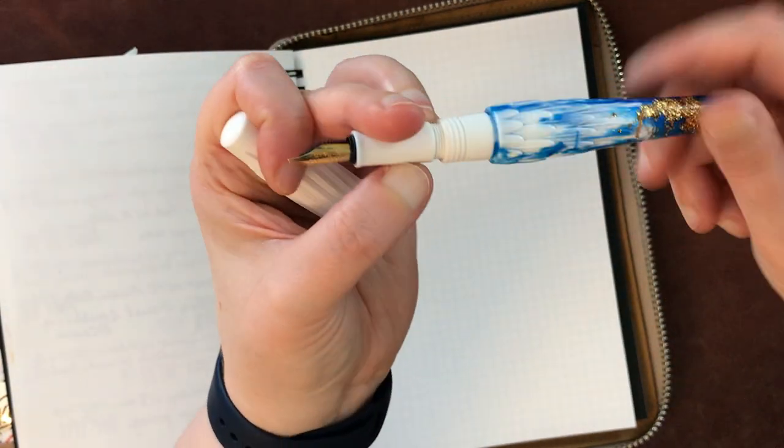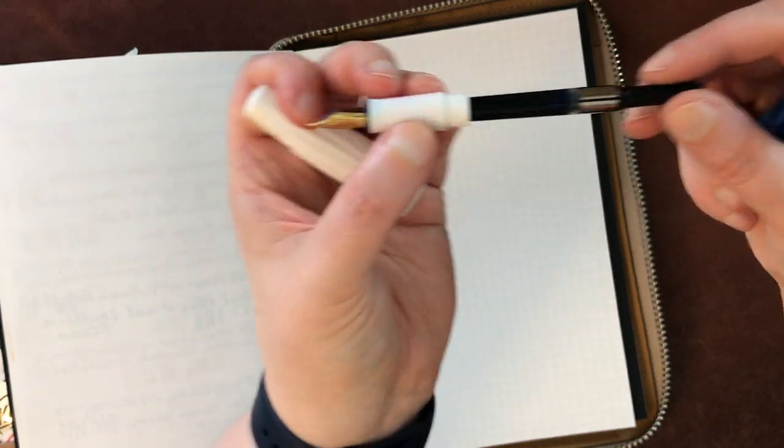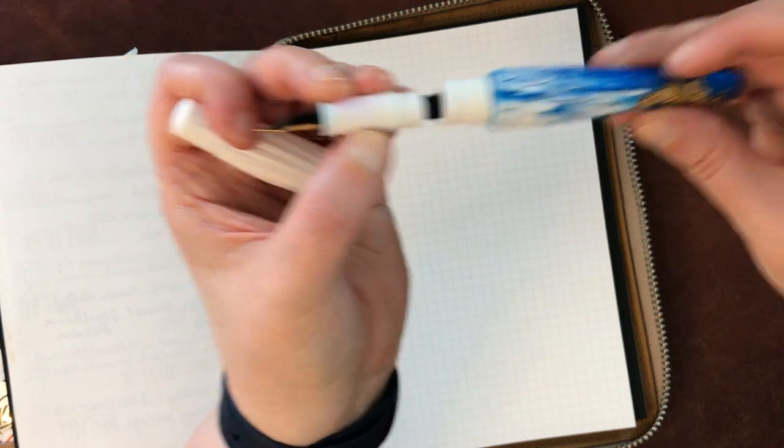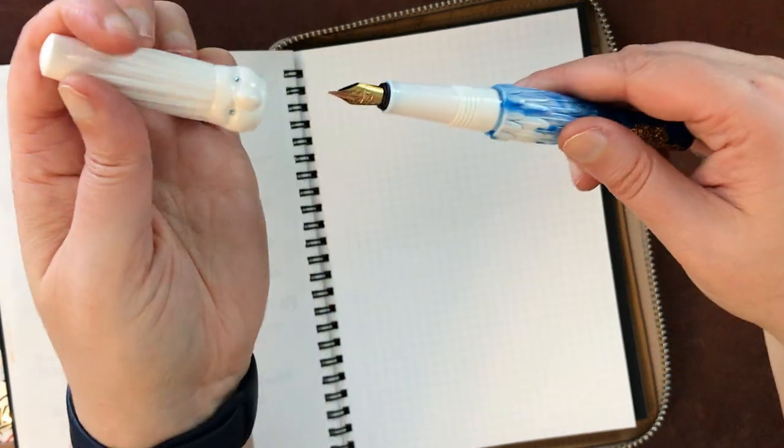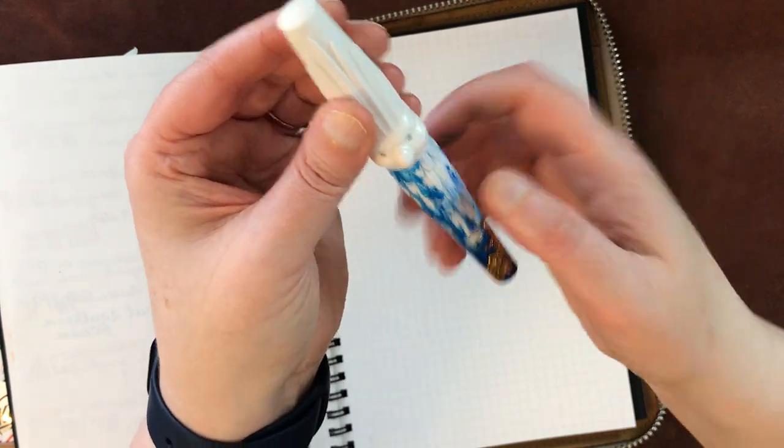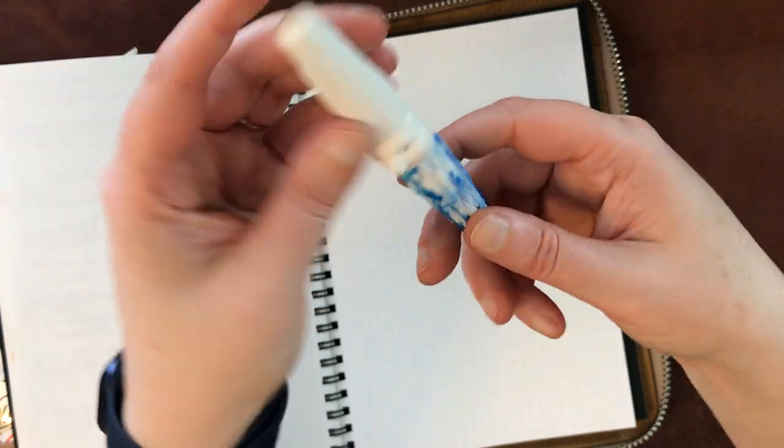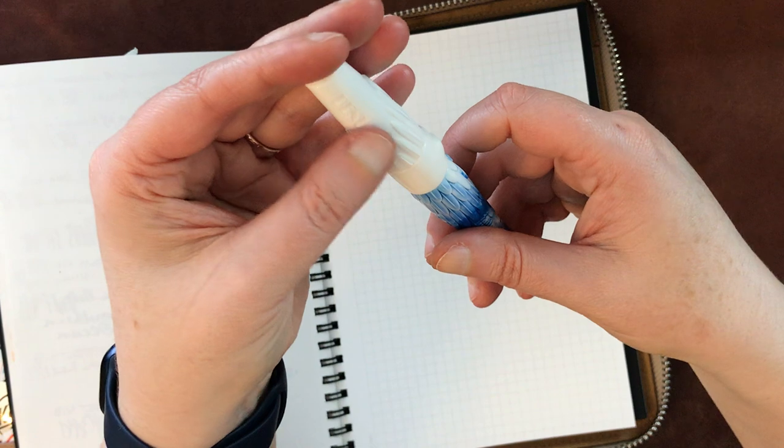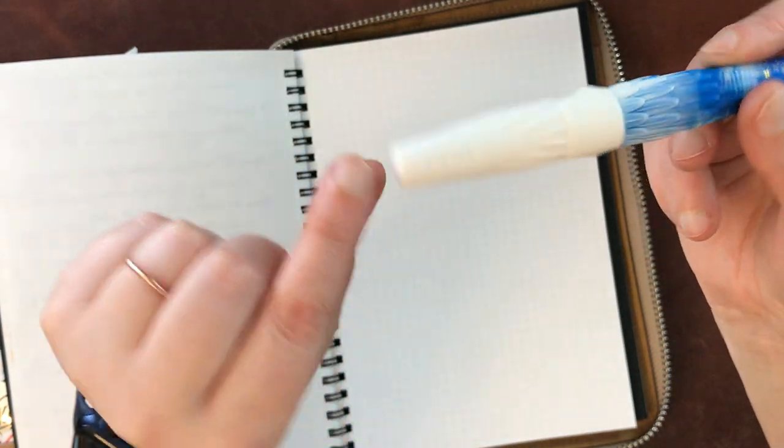So the bottom opens up like this and you have a converter here. And I believe that I put KonPeki, Pilot Iroshizuku KonPeki in here because I thought that would match nicely to the blue color here. And so it has the Bennu logo back here on the back of the head here.